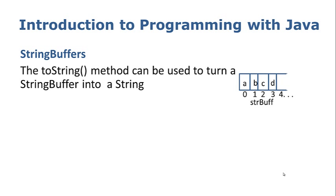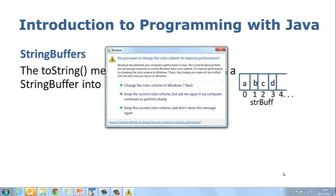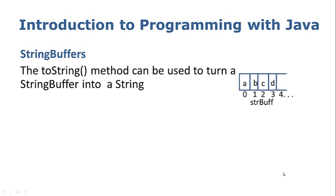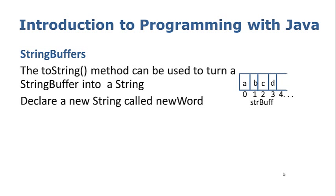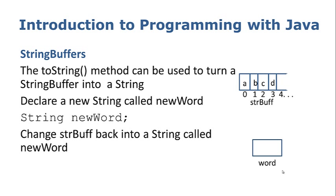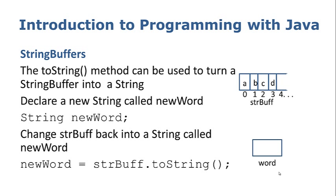Finally, when we've finished with our string buffer and got it to the state we want, we have to turn it back into a string. We don't want to be sending string buffers to and from our instantiable class — what we really want to be dealing with is strings. So we use the toString method from the StringBuffer class to turn a string buffer back into a string when we've finished with it. First, let's declare a string called newWord. Then we convert the string buffer back into a string and store it: newWord equals strbuff.toString — that takes the contents of my string buffer, turns it back into a string, and stores it in newWord.